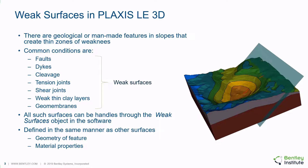It is common in numerical modeling to encounter situations where the model must represent geological or man-made features in slopes that create thin zones of weakness. Common geologic conditions might be faults, dikes, cleavage, tension joints, or shear joints. Geotechnically, there may be weak thin clay layers or geomembranes that are introduced to a slope with different shear strength properties than the surrounding material.